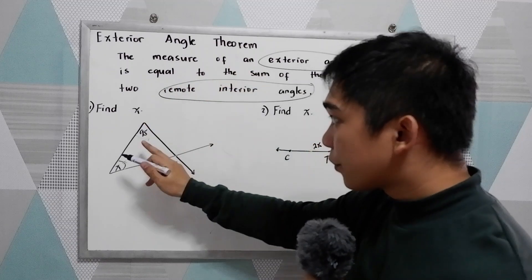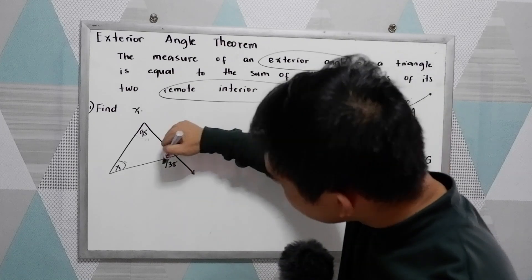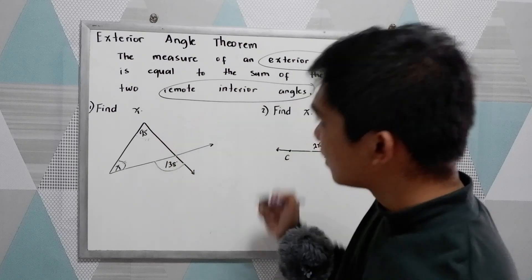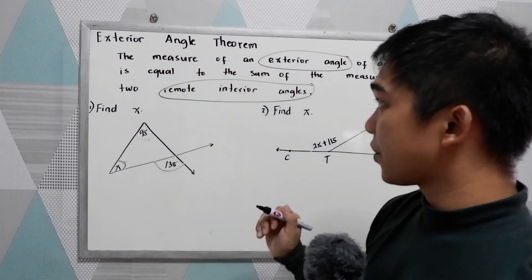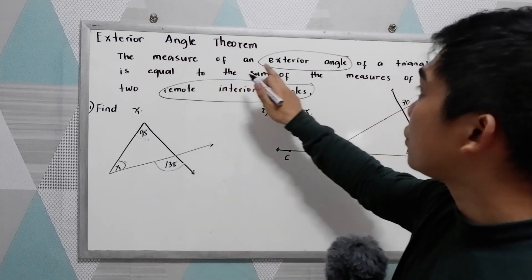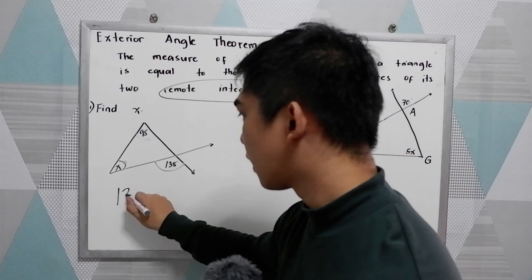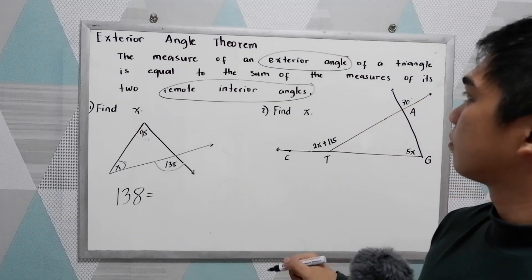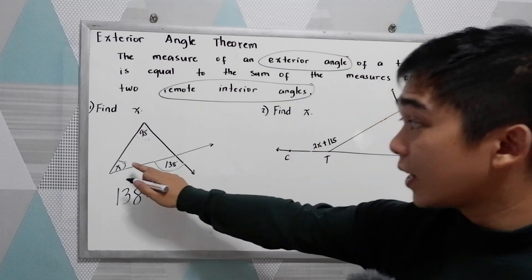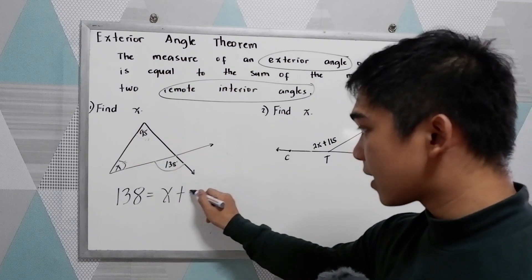So these two angles are the remote interior angles. And we have 138, that is the exterior angle. So following our exterior angle theorem, the measure of the exterior angle, which is 138, is equal to the sum of the measure of the remote interior angles, so X plus 95.